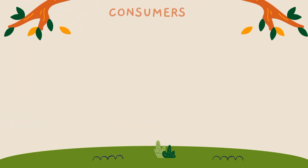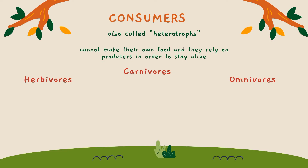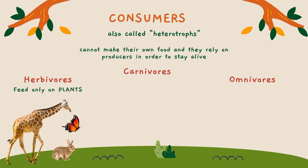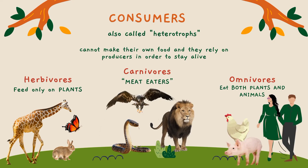Consumers cannot make their own food as producers do — thus they are called heterotrophs. They rely on producers to stay alive. Consumers are classified by the kind of food they eat: herbivores, carnivores, and omnivores. Herbivores are animals that feed only on plants — examples include rabbit, giraffe, and butterfly. Carnivores feed on other animals; the word literally means 'meat eater' — examples are snakes, lions, and eagles. Omnivores eat both plants and animals; in Latin, omnivore means 'to eat everything' — examples are humans, chickens, and pigs.